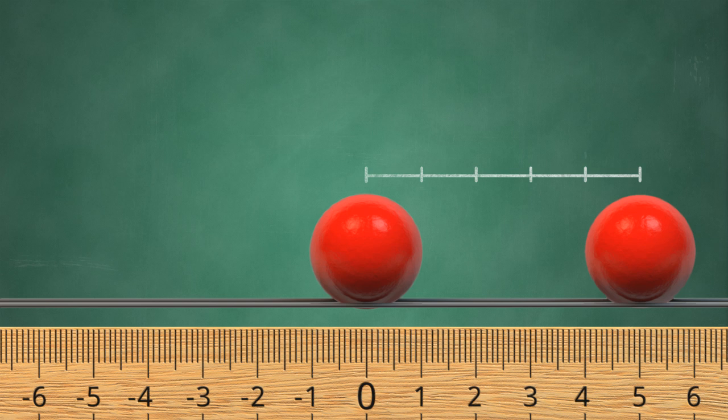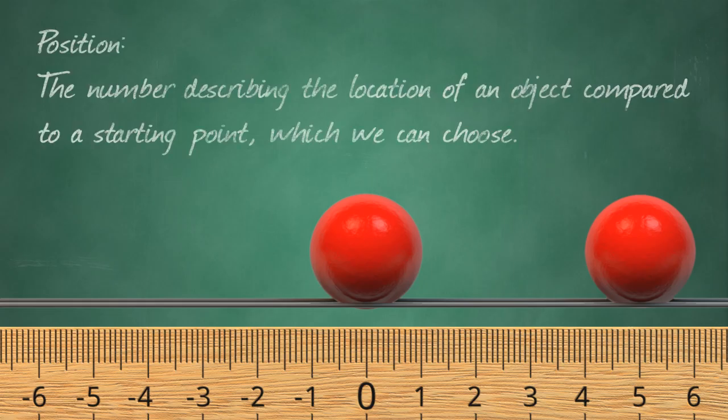And since we've set up the ruler so that balls to the right of zero have positive position, this means that balls to the left of zero will have negative position. So let's define position as the number describing the location of an object compared to the starting point, which we can choose.